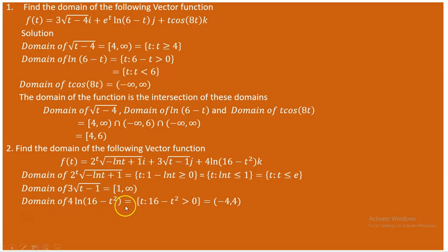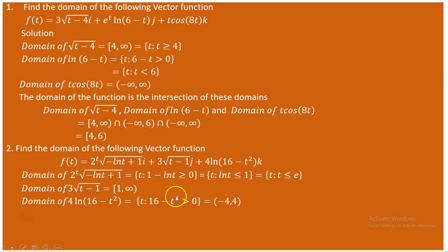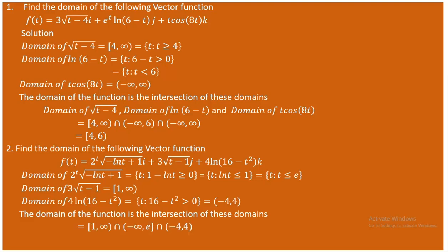For the third component, ln(16 - t²), the argument must be positive: 16 - t² > 0, meaning t² < 16. Solving this gives -4 < t < 4. So we now have three domains: (0, e], [1, ∞), and (-4, 4). Taking their intersection gives [1, e].